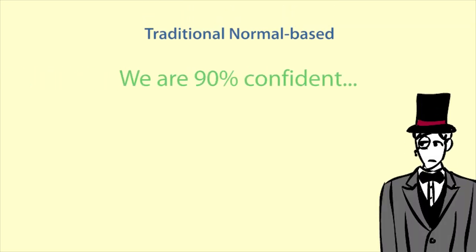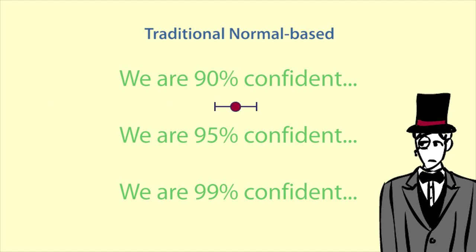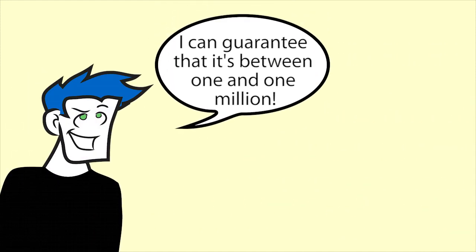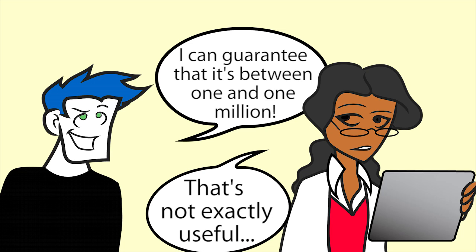In traditional confidence intervals, we also wish to specify the level of confidence. The more confident we wish to be, the larger our confidence interval will be. If we wanted to be certain of including the population parameter, we could use a very wide interval, but that would not give us any useful information.